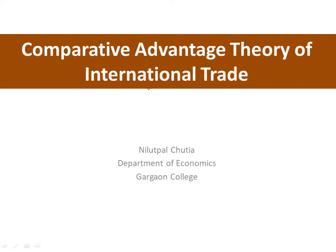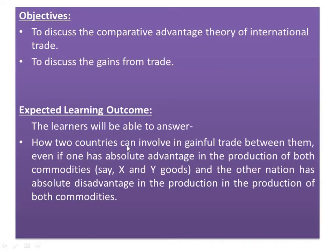Welcome everyone. Today's topic of discussion is the comparative advantage theory of international trade. The theory was given by David Ricardo in his book Principles of Political Economy and Taxation in 1817. This theory is a development over the absolute advantage theory of international trade given by Adam Smith. In this lecture I shall discuss the comparative advantage theory and show you the gains from trade for countries involved in international trade based on the law of comparative advantage.